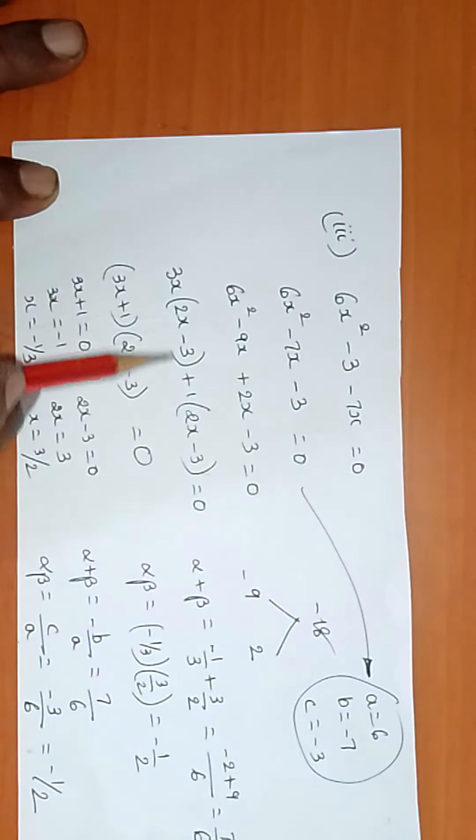After factorizing we will be getting (3x + 1)(2x - 3) = 0. On solving we will be getting x = -1/3 and x = 3/2.